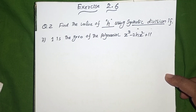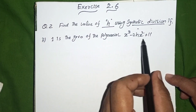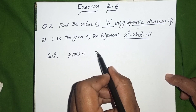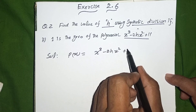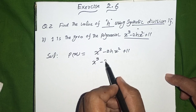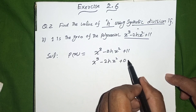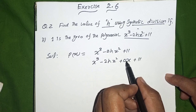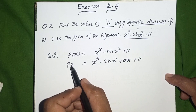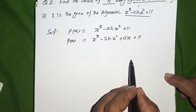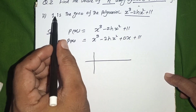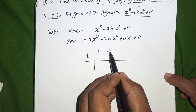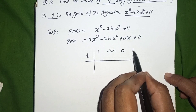Part 2: Find the value of H by using synthetic division if 1 is the zero of the polynomial. The polynomial is P(x) = x³ - 2Hx² + 11. Since there is no x term, we write it as x³ - 2Hx² + 0x + 11. The coefficients are: x³ → 1, x² → -2H, x → 0, constant → 11.